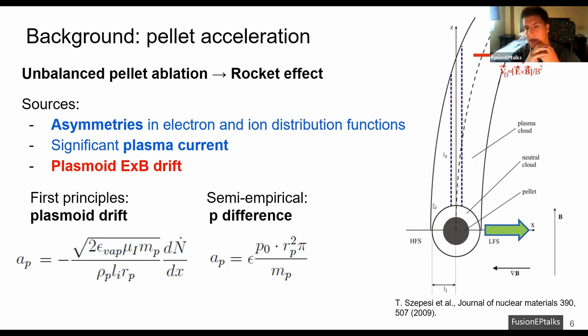Here we have the typical example of a low-field side injection of a pellet in a tokamak where the plasmoid drifts towards the low-field side of the machine. This leads the high-field side to be less efficiently protected by the plasmoid and therefore it will be overablated and this will lead to acceleration via rocket effect towards the low-field side of the machine.